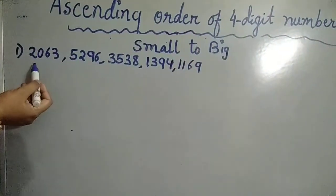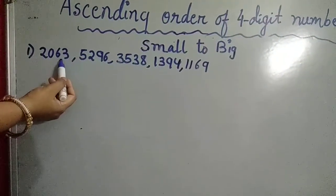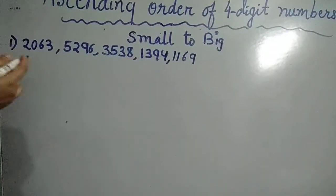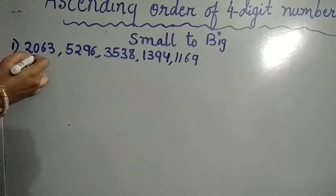We will take one example. We are having here five numbers: one, two, three, four, five. All are four-digit numbers.